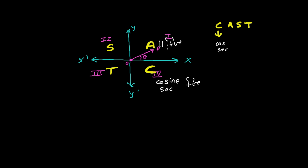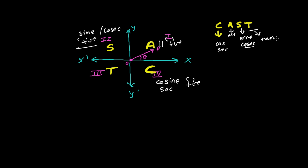In the first quadrant, A stands for 'all' — all trigonometric ratios: sine, cosine, tangent, secant, cotangent, cosecant — everything is positive. S represents sine, so in the second quadrant sine and cosecant are both positive, and the rest — tan, cot, sec, cosine — are all negative. In the third quadrant, T stands for tangent, so tangent and cotangent are both positive, and the rest — sine, cosine, cosec, secant — are all negative.